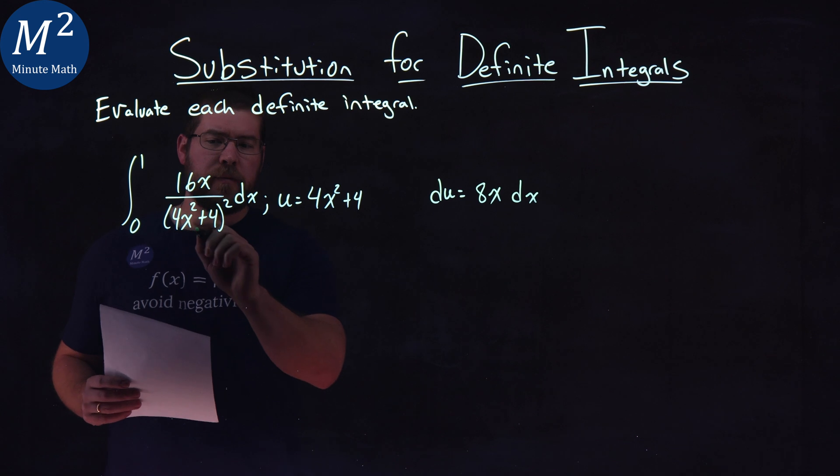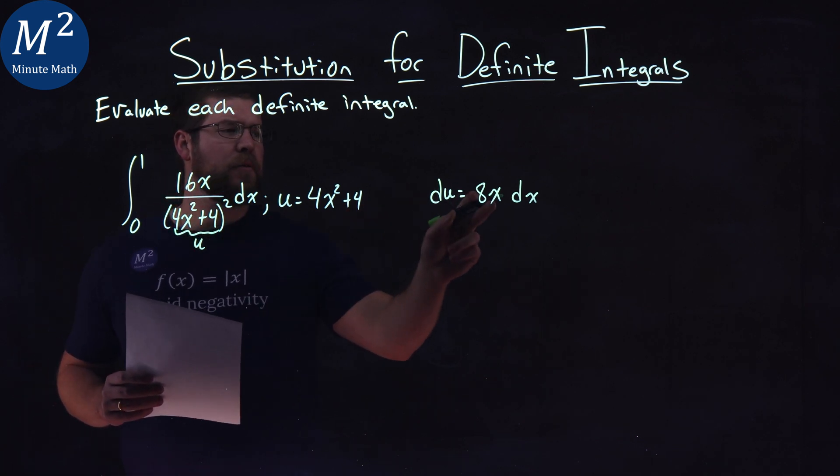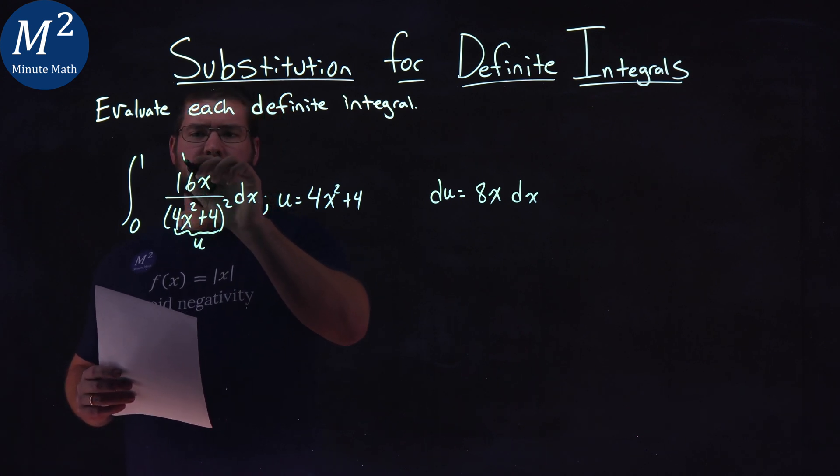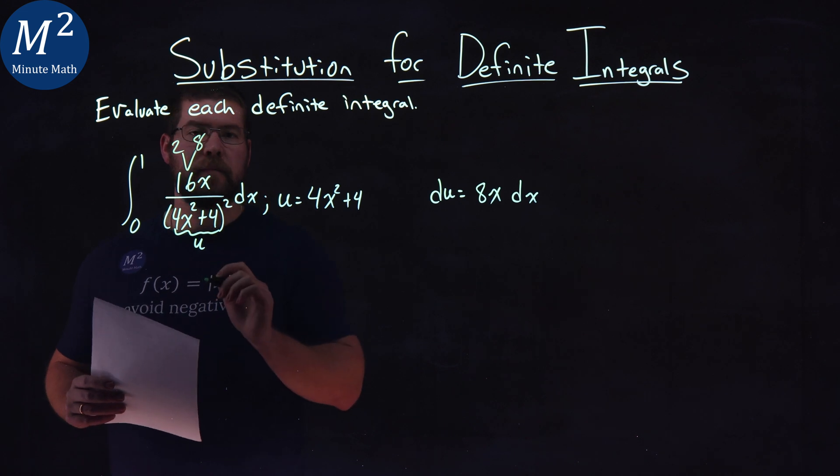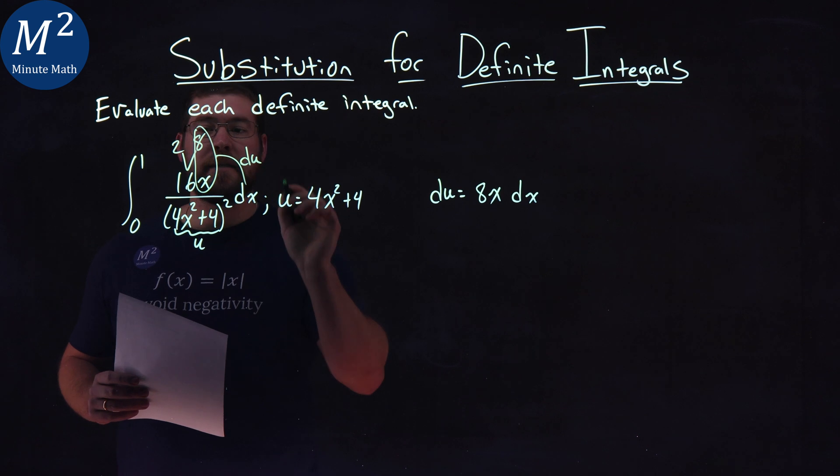Let's see how it applies. Clearly we see u down here, 4x squared plus 4. My du, not so clearly. We have a dx right here, we have an x, but we have a 16. 16 though is 2 times 8, and there we see our du. We have the 8x right here times dx is my du.